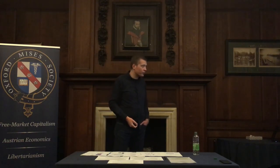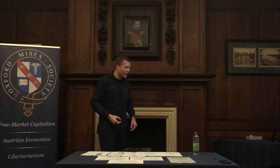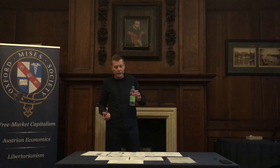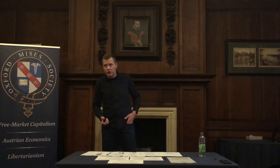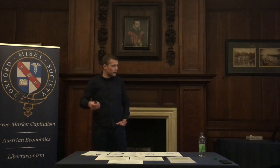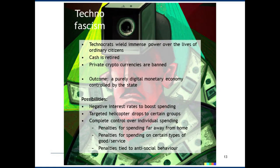Penalties for spending on certain types of goods or services become possible — not just different tax rates but different prices for different people. For example, graded taxation where young people face much higher tax rates on cigarettes, changing as they age. Penalties for anti-social behaviour are also feasible. The central bank digital currency becomes an opportunity to extend the monetary system into social interactions in ways we haven't seen before.